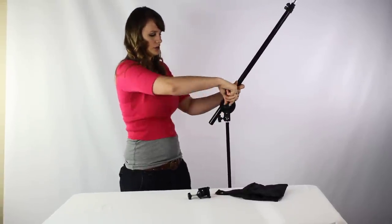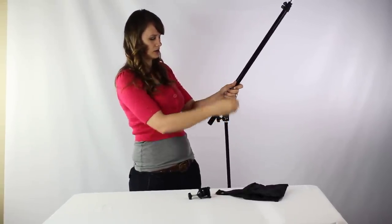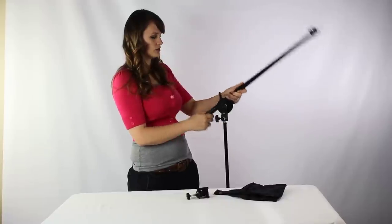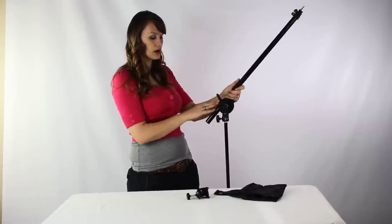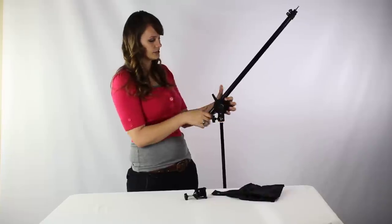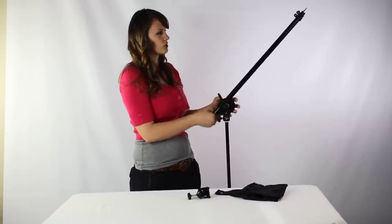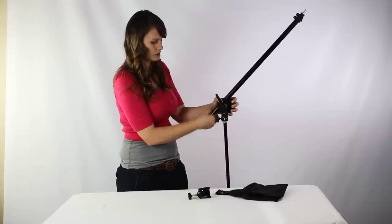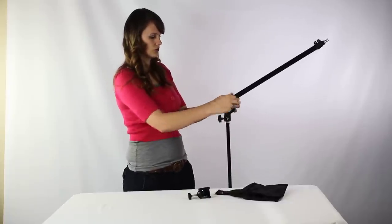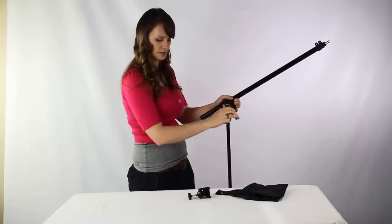To adjust the angle of your boom, you simply unscrew this right here, and it's going to allow you to angle it. Be careful that you don't pull this apart. But you can also slide it a little bit farther out if you want to. Once you have the correct angle, just tighten it up.